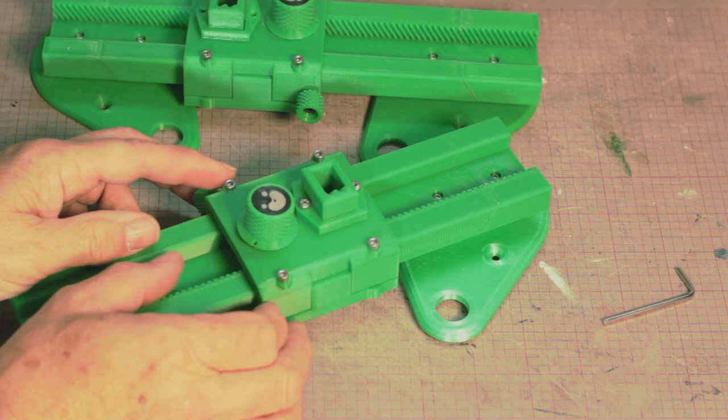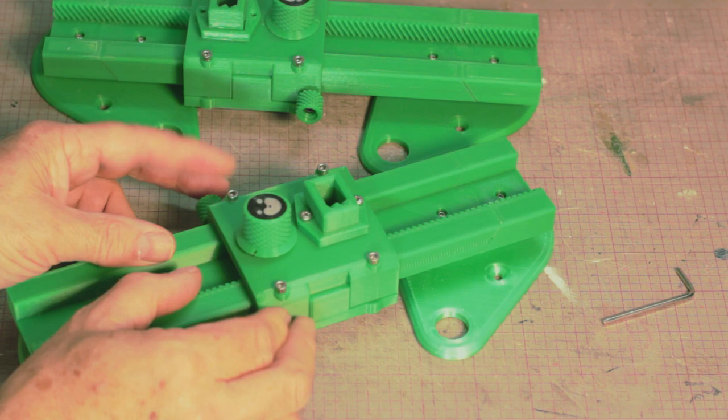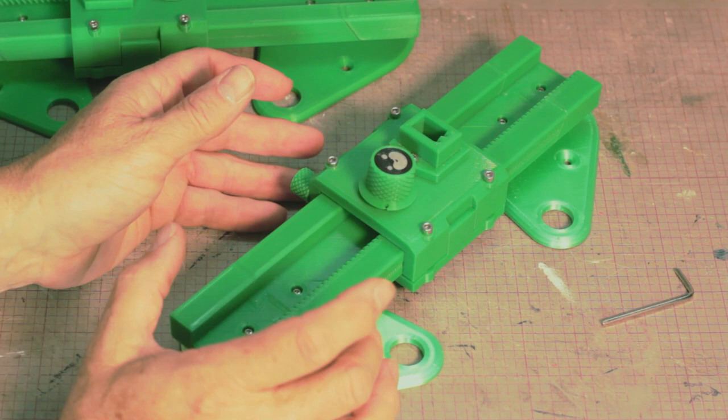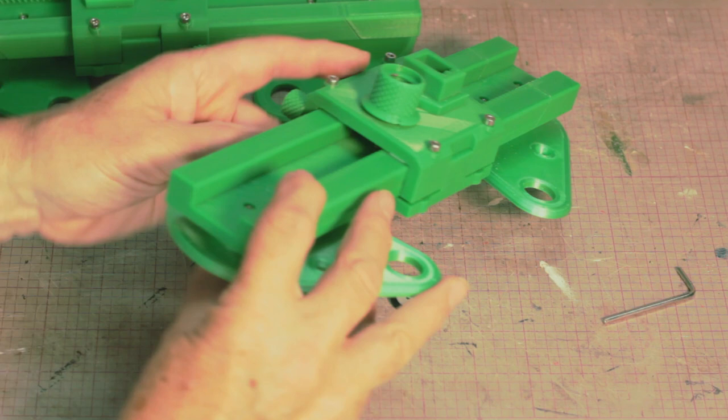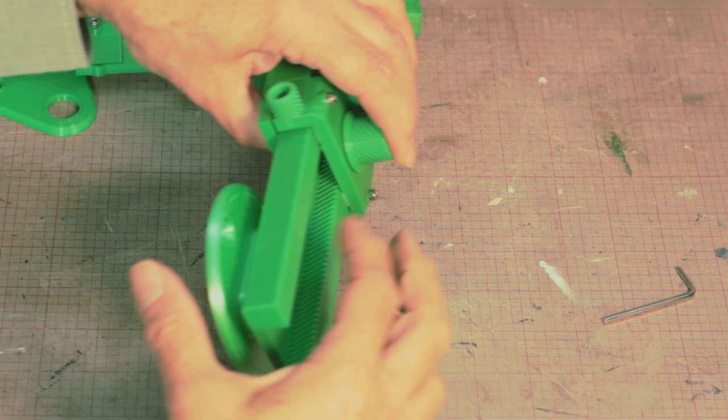Now one thing to watch out for with this which is really important is that when you put the bolt in for the control knob it's actually about 3mm too long. I don't know if you can see that there but there's a little gap and it means that it actually hits the bottom of the rail so that needs to be trimmed off.